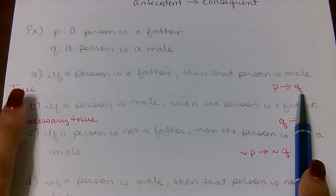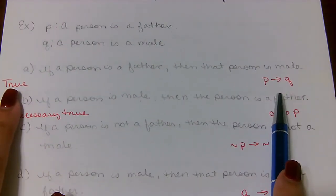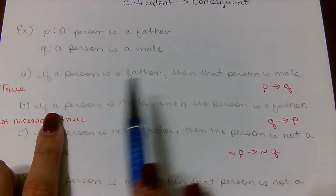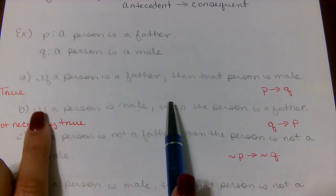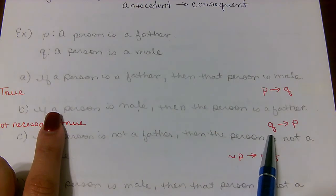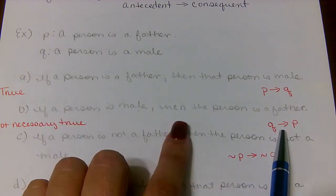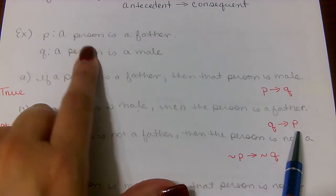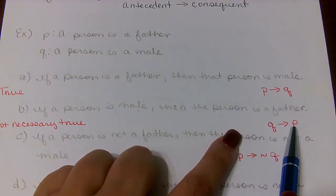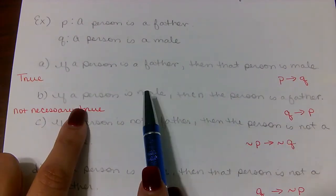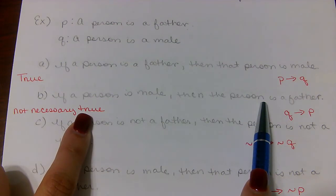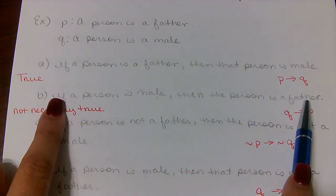For part B: if a person is a male, then that person is a father. A person is male is Q, so we have Q → P. However, this is not necessarily true — not all people who are males are fathers.